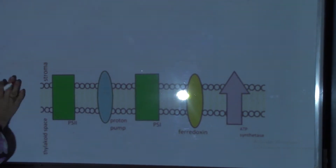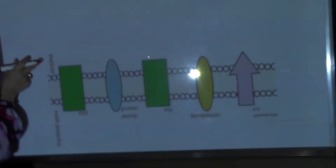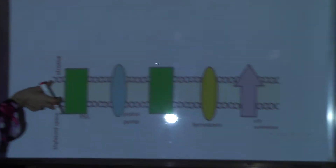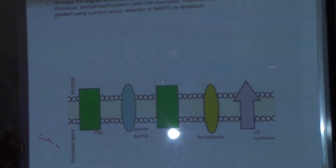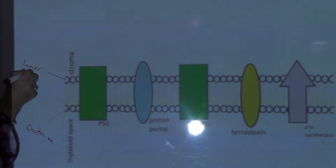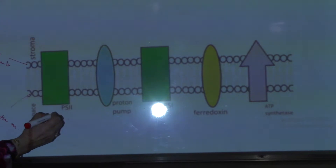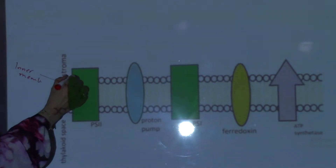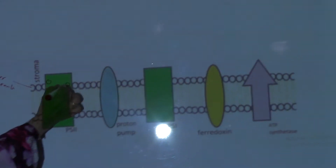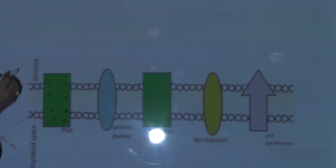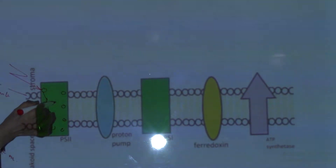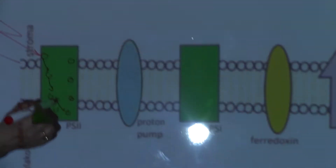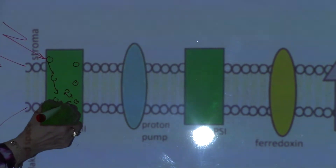First, this is the membrane of the thylakoid. This is the stroma and here is the thylakoid space. This is the outer membrane of the thylakoid, and here is the inner membrane of the thylakoid which is in contact with the stroma. This is photosystem II. Light falls here on the chlorophyll molecules of photosystem II, exciting electrons, which flow from one molecule to the next until they reach the reaction center.